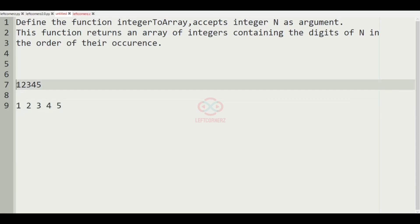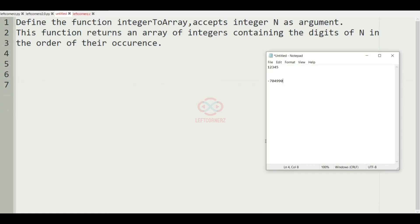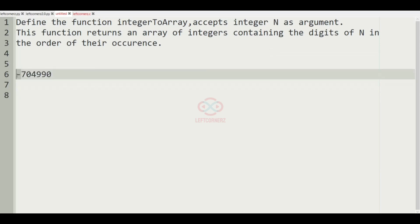Now we'll take our another test case. In this test case, we have a minus sign before them. We'll ignore it and print the other integers: 7, 0, 4, 9, 9, 0. So this will be our output.